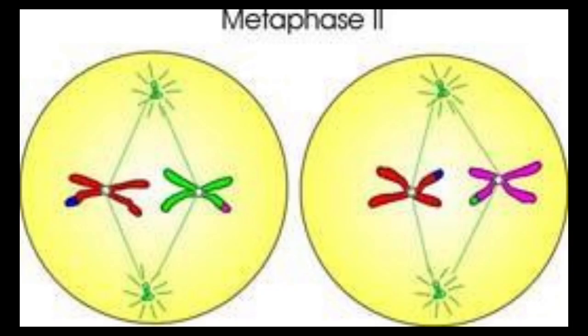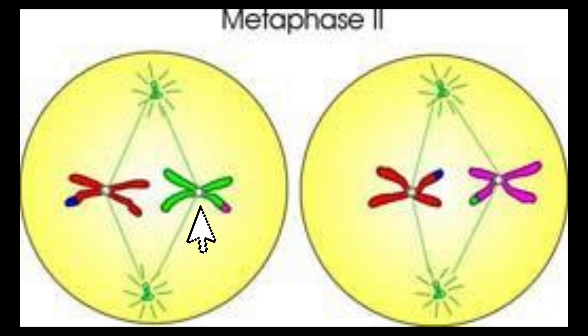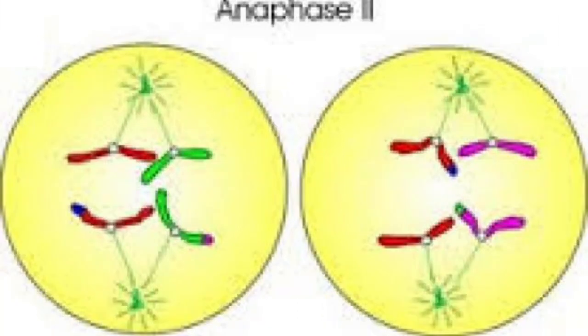After prophase 2, the next phase is metaphase 2. During metaphase 2, spindle fibers start to extend from one end of the centriole to the other end, and the sister chromatids are attached to the spindle fibers at the equator. After metaphase 2, the next phase is anaphase 2. During anaphase 2, the sister chromatids of each of the 23 chromosomes are separated by the action of spindle fibers and pulled to opposite ends of the cell.